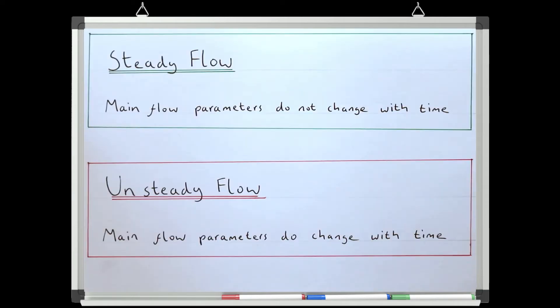To recap: a flow is steady if all of the main parameters are constant with time, and unsteady if any of the parameters are changing with time.